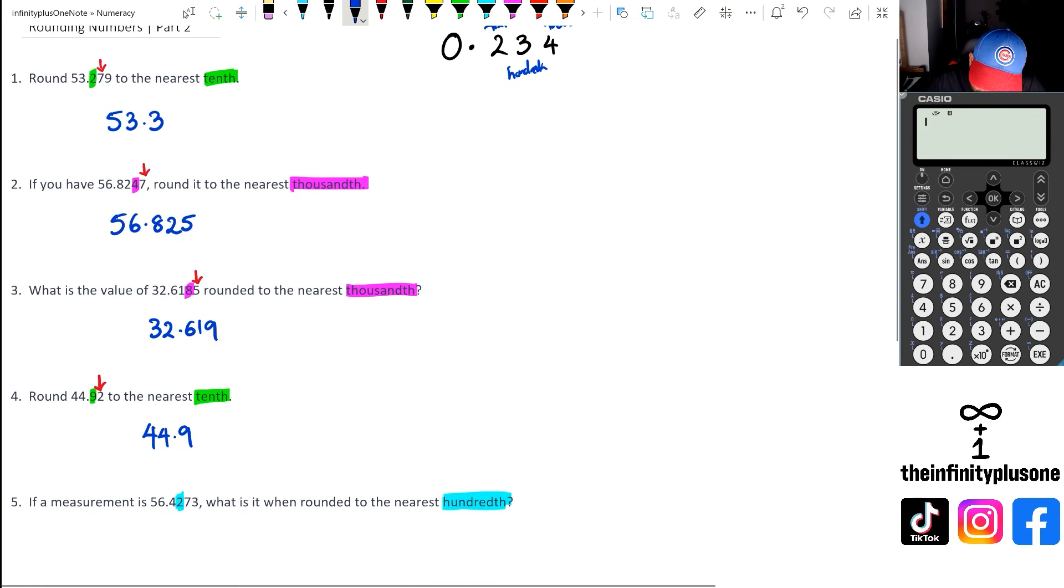Finally, looking at question five, we've got 56.4273. Once again, we're going to look at the number right after the highlighted number. In this case, it's a seven. Because it's a seven, it's above five, so we would need to round this number up to 56.43.